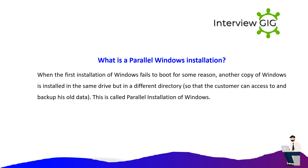What is a parallel Windows installation? When the first installation of Windows fails to boot for some reason, another copy of Windows is installed on the same drive but in a different directory, so that the customer can access and back up their old data. This is called a parallel installation of Windows.